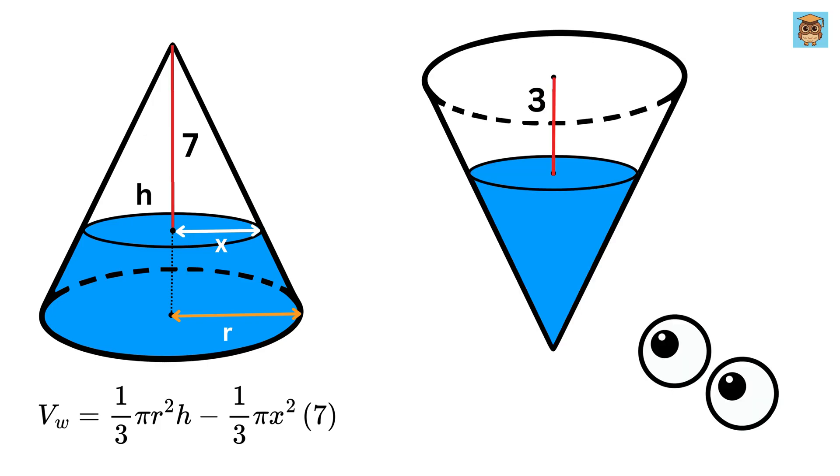Now let us have a look at this flipped cone. This is H. This is radius R. And this is 3 units. So the height of the water will be H minus 3. Let the radius of the surface of the water equal Y.